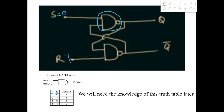Because there is at least one zero in one input, we can clearly say that this output will be one. And if this output is one, we can see that it feeds back into the bottom NAND gate. So one and one go into the NAND gate and it produces zero. In other words, if Q equals one, then Q prime will automatically be zero.